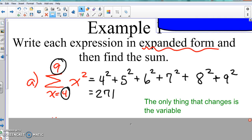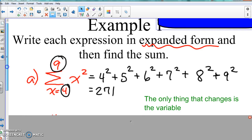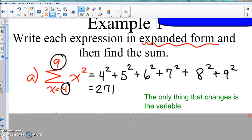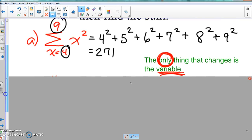The only thing that changes is the variable. Nothing else changed. No number changes. So you see that the square did not change at all. It stayed squared for every single one. Whatever the variable is, it's the only thing that changes. The only thing that changes is the variable. So let's go to the next one.